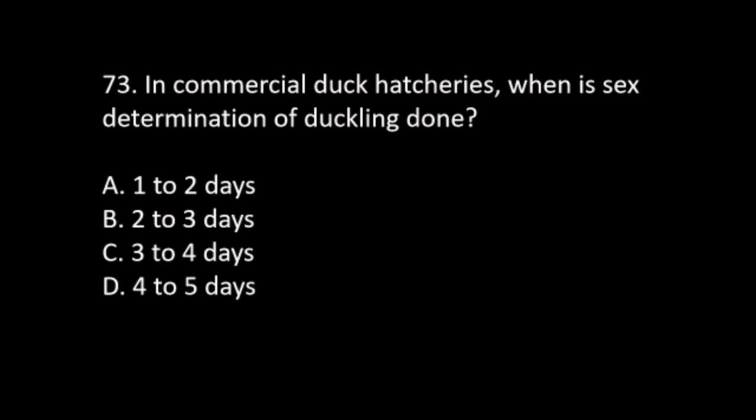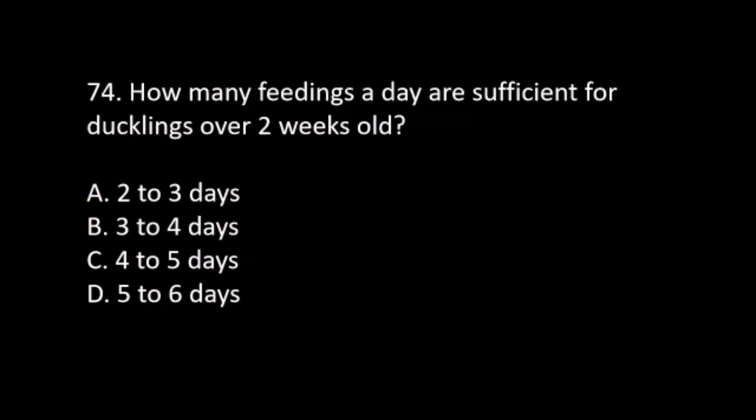Number 73. In commercial duck hatcheries, when is sex determination of ducklings done? A. 1 to 2 days. B. 2 to 3 days. C. 3 to 4 days. D. 4 to 5 days. Number 74. How many feedings a day are sufficient for ducklings over 2 weeks old? A. 2 to 3 times. B. 3 to 4 times. C. 4 to 5 times. D. 5 to 6 times. The answer is C. 4 to 5 times.